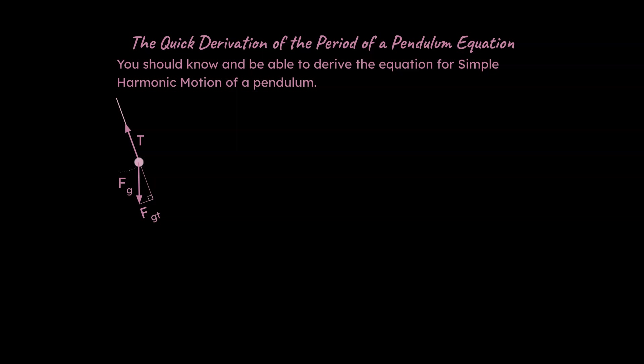Once we go through the derivation, it'll make more sense to say that this equation works for very small angles. So if we have a pendulum, if you think about the forces that are involved, there's a tension force going along the length of the string or rope, and there's a force of gravity going down, and there's a restoring force as well. We'll call this FGT — the tangential direction component of the force of gravity — and that really is the force that's going to drive the pendulum back towards the equilibrium position.